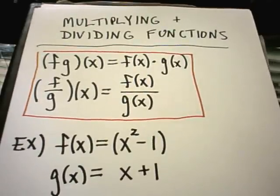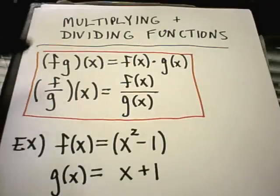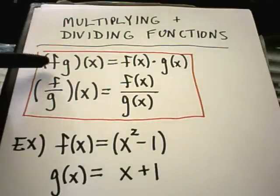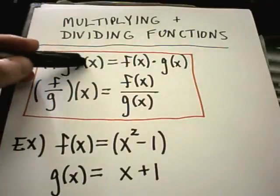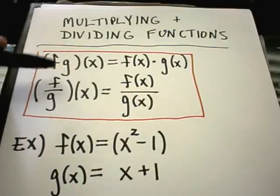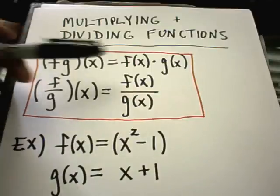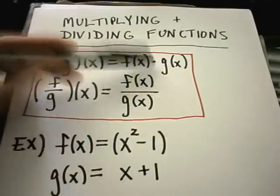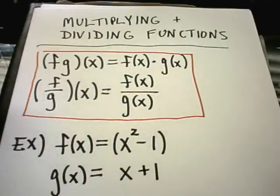Alright, in this video we're going to talk about multiplying and dividing functions. The notation that you'll see is going to look something like this. They'll write fg and then in parentheses an x. And what this notation means to do is take your function f of x and multiply it by your function g of x.